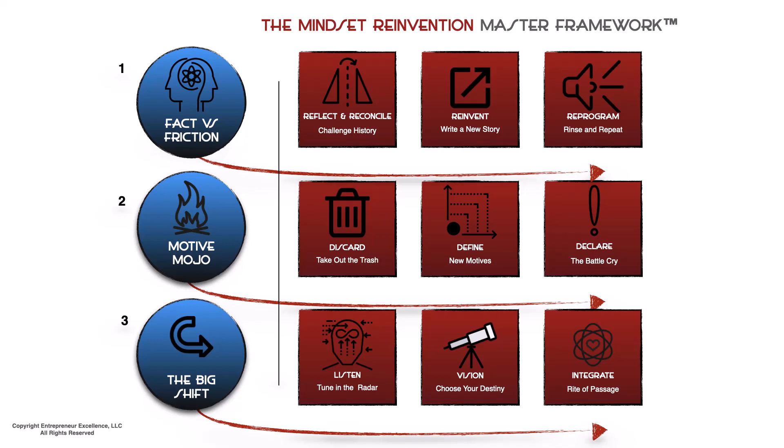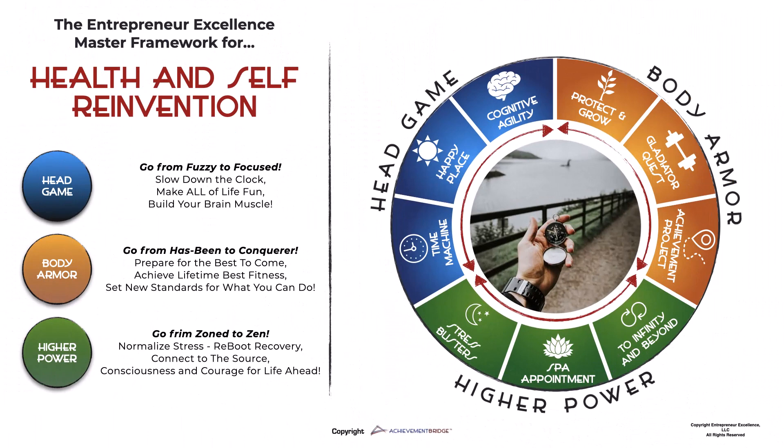Here's another framework that we use for health and wellness in the Entrepreneur Excellence Alliance. You'll see a slightly different layout here, but it's still three phases with three segments embedded within each. The titles and names are purposely depicted to create curiosity, but also clarity as epiphanies occur when they go through the program.